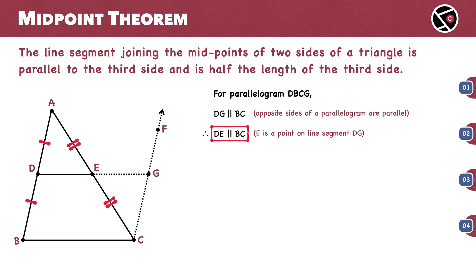We still need to prove that DE is one half the length of BC. So, let's continue further. DG equals BC. Opposite sides of a parallelogram are equal. Since E is a point on DG, we can replace DG with DE plus GE.